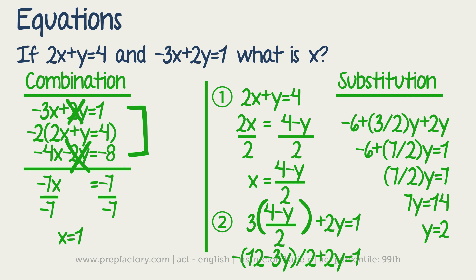Then you multiply by 2. So then you have 7y equals 14. And then at the bottom here, y equals 2. And we know from the first equation if 2x plus y or 2 equals 4, then x would have to be equal to 1.